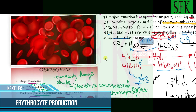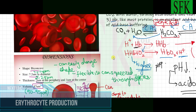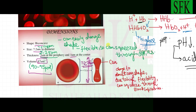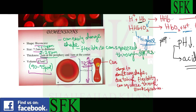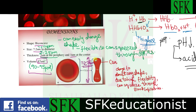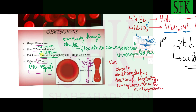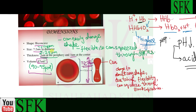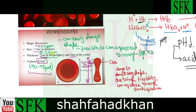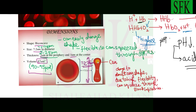Their characteristic shape is that they appear as biconcave discs. Taking a side view, the red blood cells are squeezed from the center and their peripheral regions are a bit thicker. The central region is around one micrometer while the peripheral region is around two to two point five micrometers.